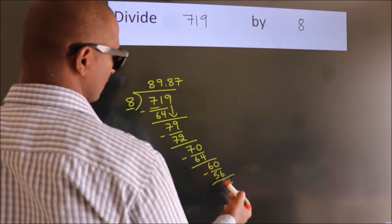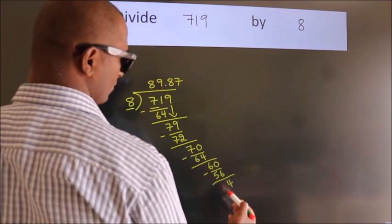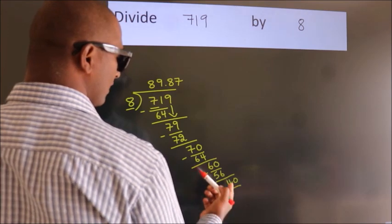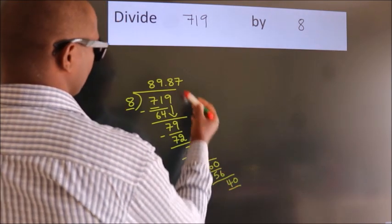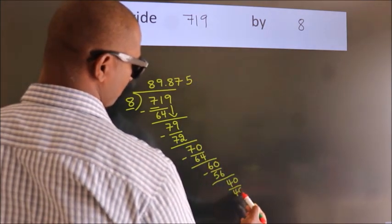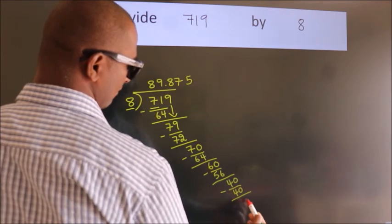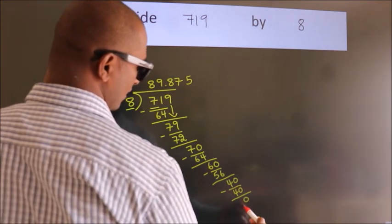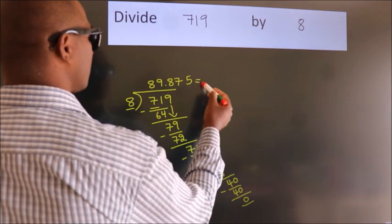After this, we already have the decimal, so directly take 0. So 40. When do we get 40 in the 8 table? 8 times 5 is 40. Now we subtract. We get 0. Here we got remainder 0, so this is our quotient.